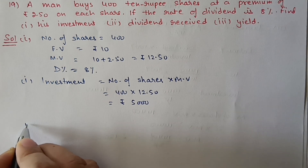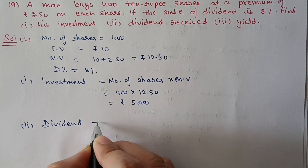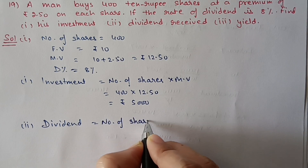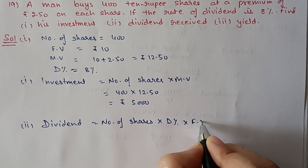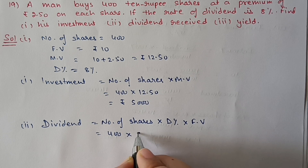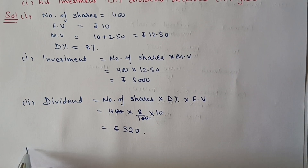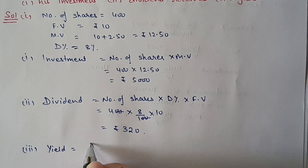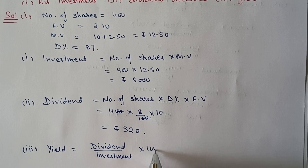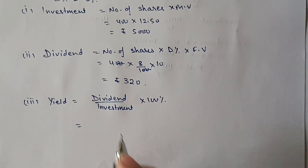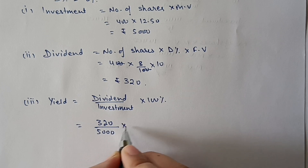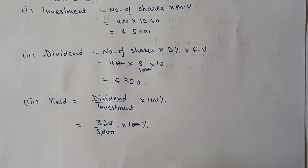Second, dividend = number of shares × dividend percentage × face value = 400 × (8/100) × 10 = 320 rupees. Third, yield (return percentage) = dividend ÷ investment × 100% = 320 ÷ 5,000 × 100. Cancelling zeros, after dividing we get 6.4% return.